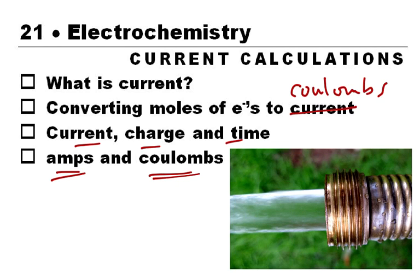So coulombs for electricity is kind of like the flow of water. Coulombs is the amount of water that is actually flowing in a system, out of a hose. And the amps is how fast, the rate at which those coulombs are flowing out. So the rate at which the water is going to flow.